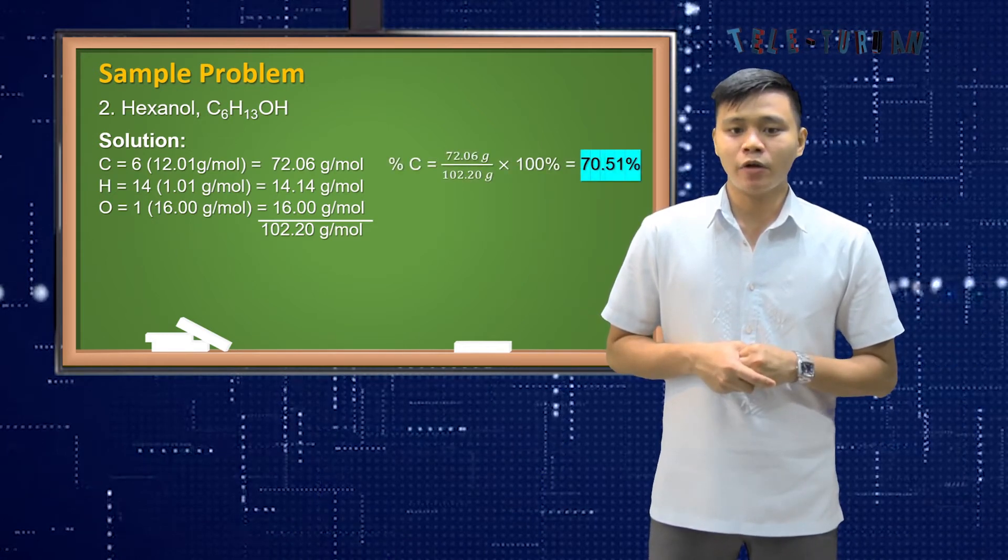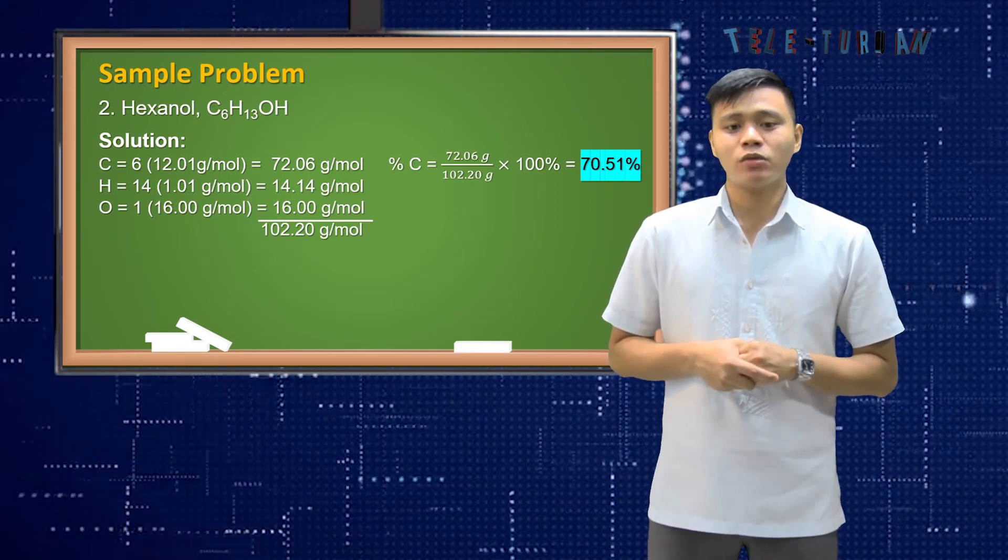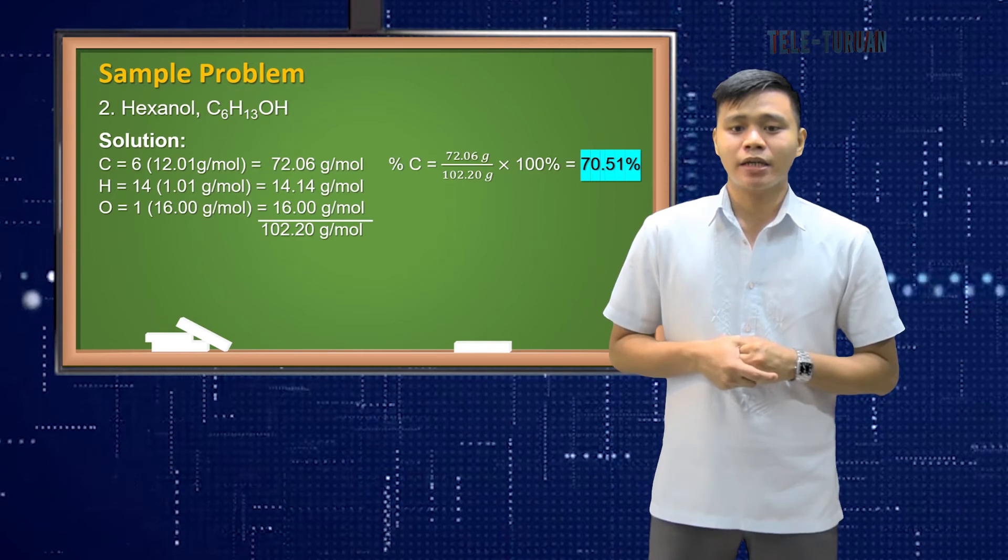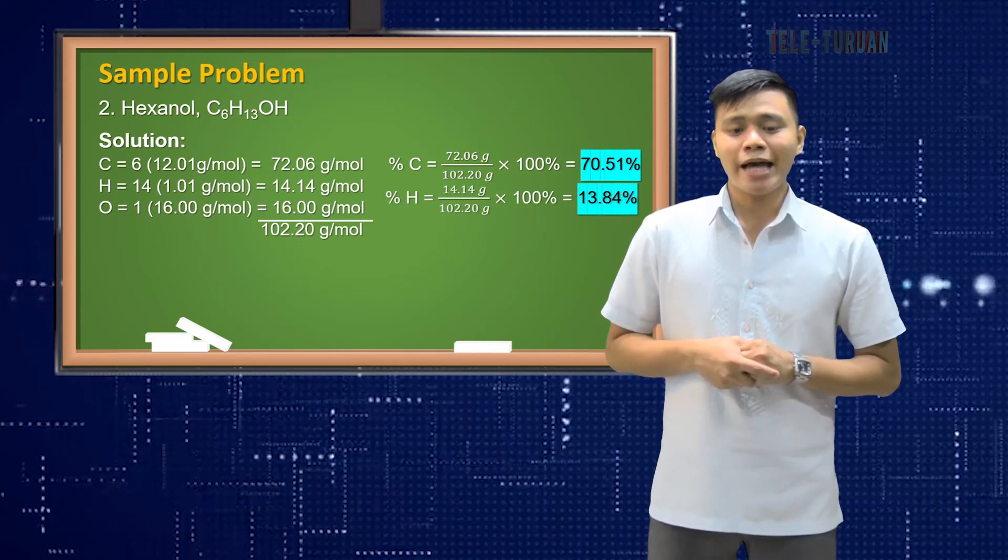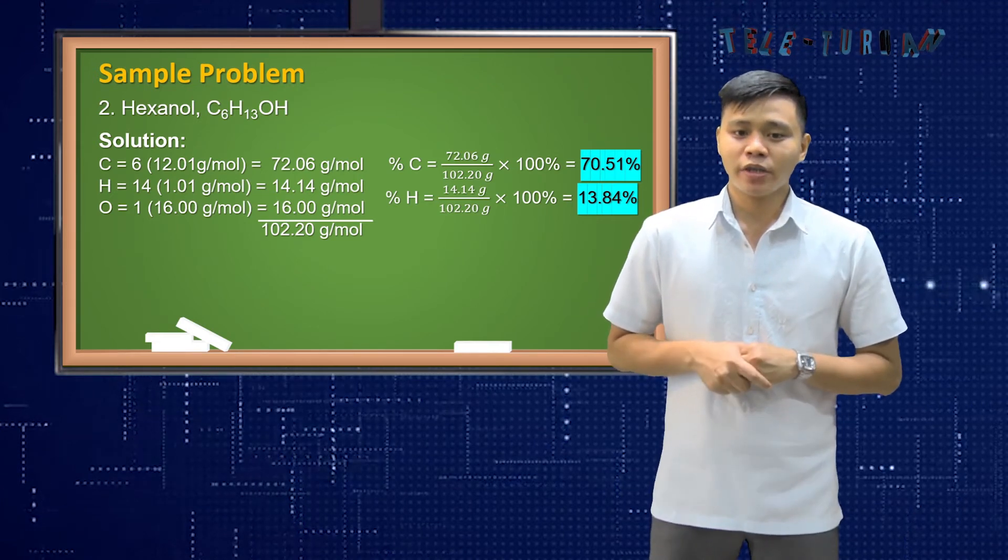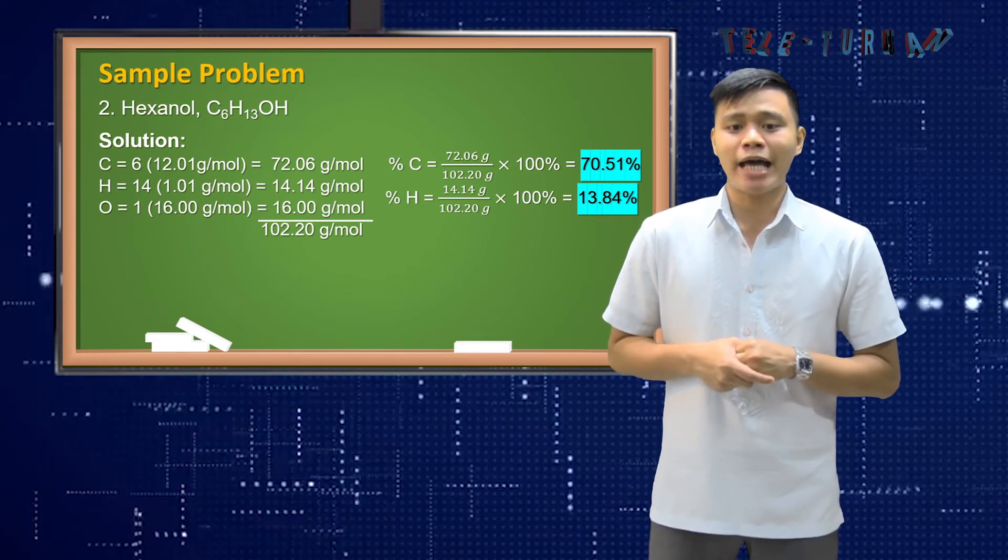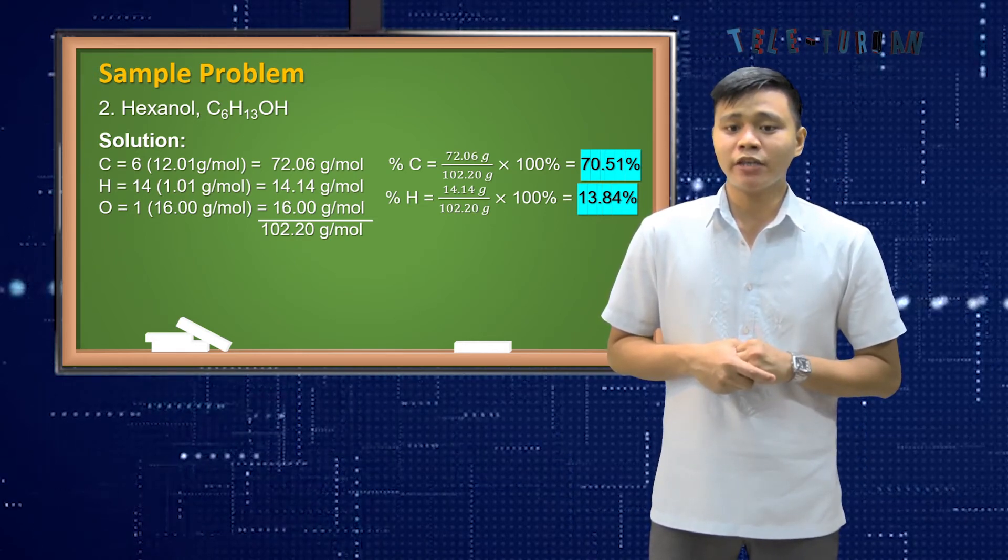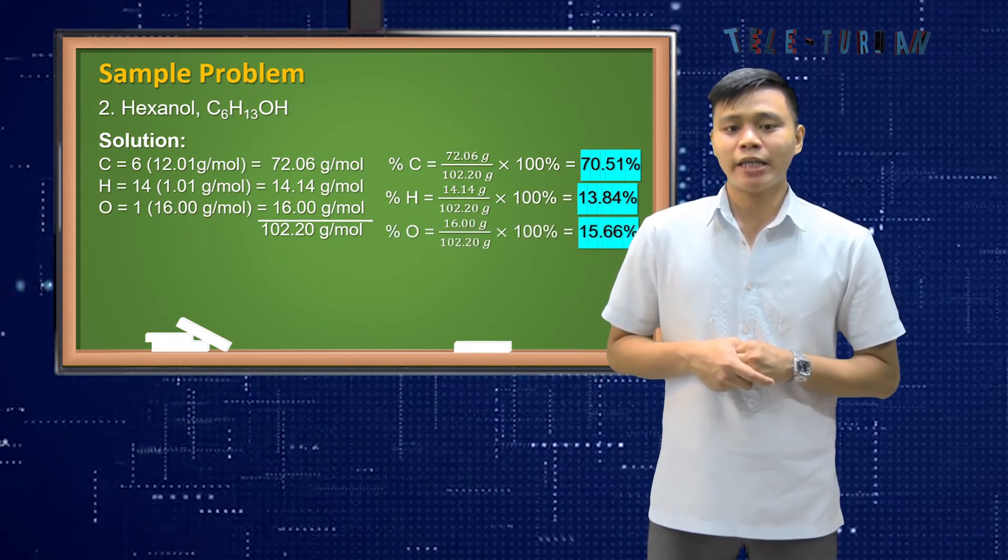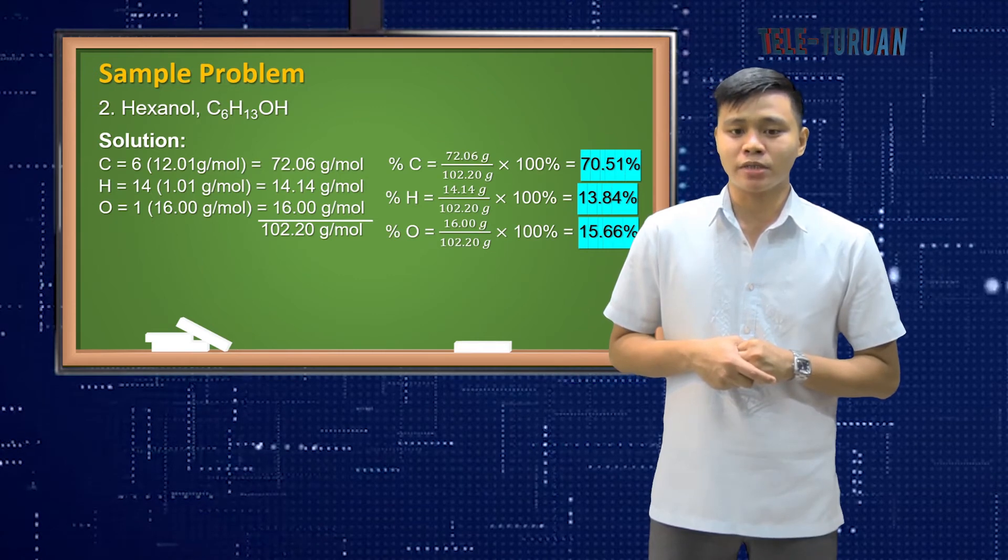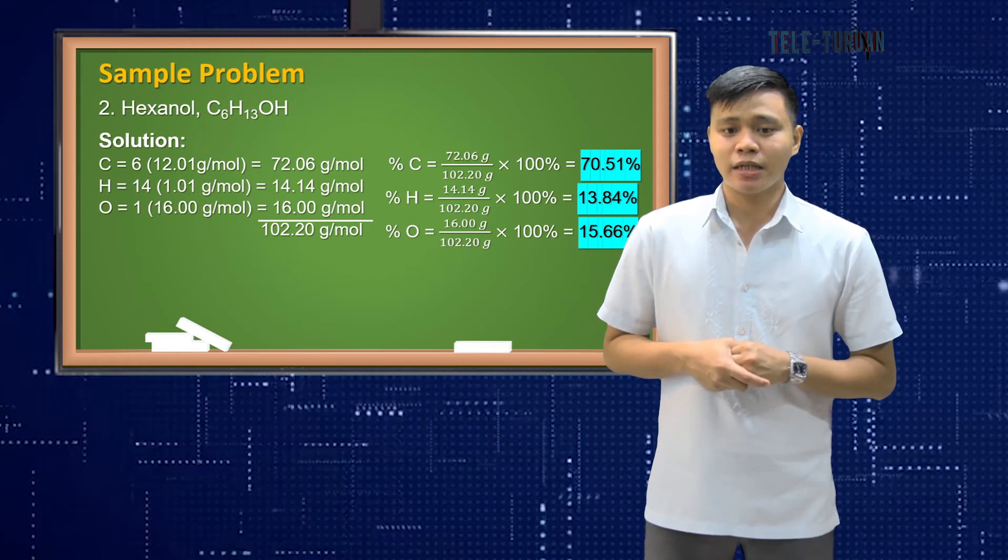for percent carbon, it is equal to 72.06 grams divided by 102.20 grams times 100% is equal to 70.51%. For percent hydrogen, it is equal to 14.14 grams divided by 102.20 grams times 100%. It is equal to 13.84%. For percent oxygen, it is equal to 16.00 grams divided by 102.20 grams times 100%. It is equal to 15.66%.